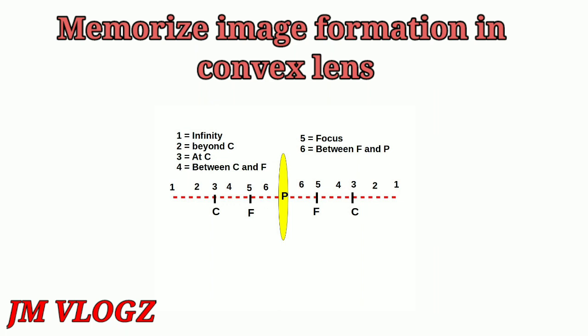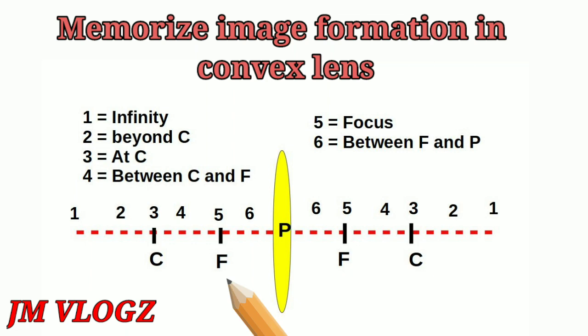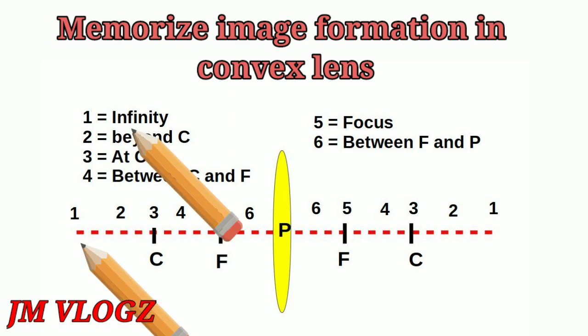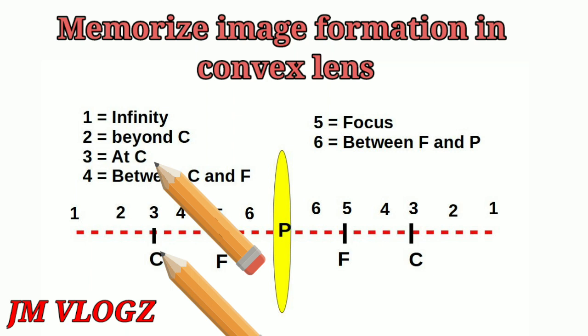For that, we consider a convex lens and mark the position of the pole, focus, center of curvature, and so on. We are placing the object at different positions, so we mark those different positions. The first point is taken as infinity, so for infinity we mark 1. Then the next point is beyond C, marked as 2.